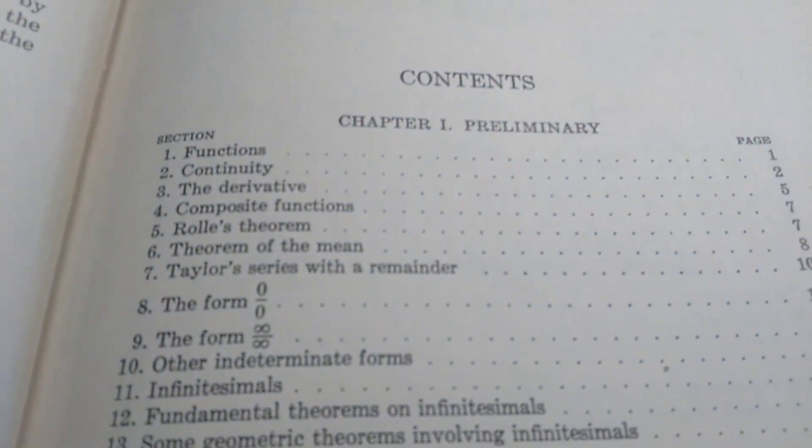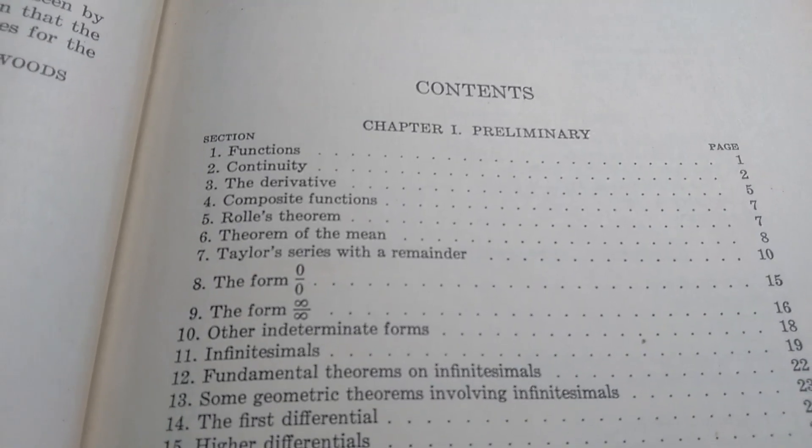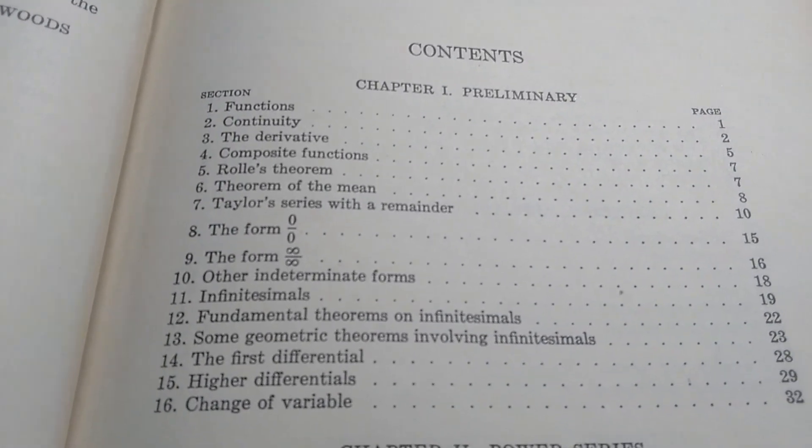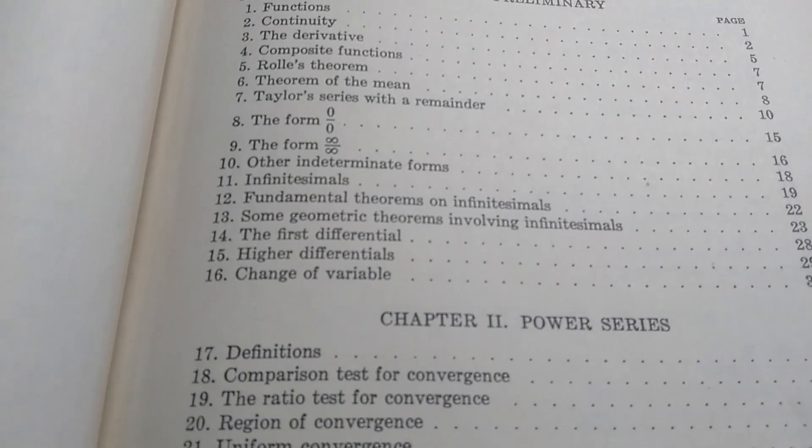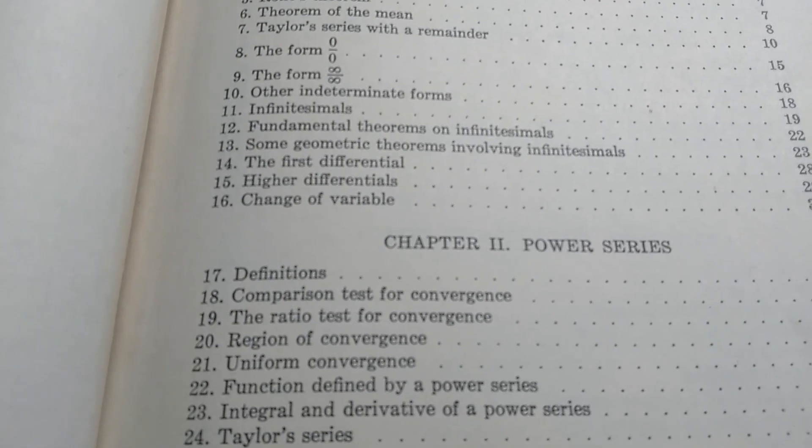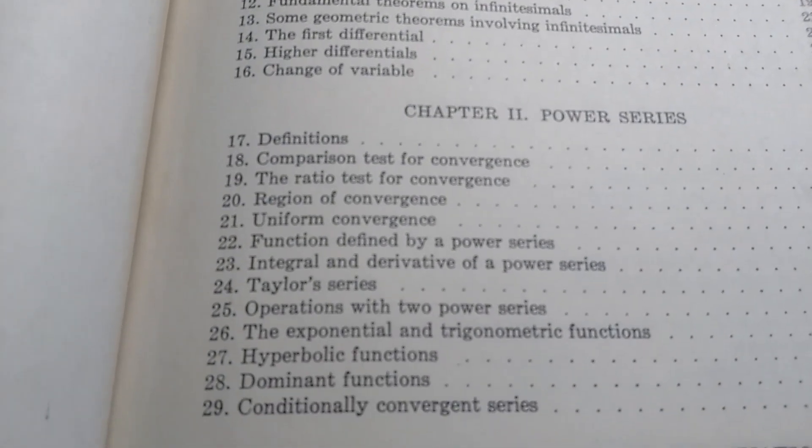So these are the contents. Starts off with functions, continuity, composite functions, Rawls theorem. Wow, Taylor series. Interesting order of topics here. And he goes on to power series. Yeah, very different than the ordering that you would see in a book today.